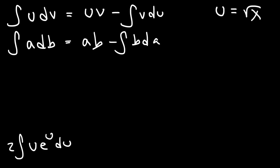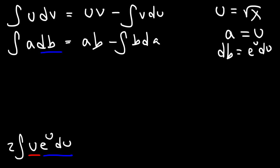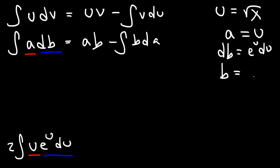So let's say that u is equal to a, and the other part is going to be db. So db is going to be e to the u times du. We have a equals u (in red) and db equals e to the u du (in blue). Now, if we integrate both sides of this expression, the integral of db is b, and the integral of e to the u du is just e to the u. Now we need to differentiate: da is simply equal to du.